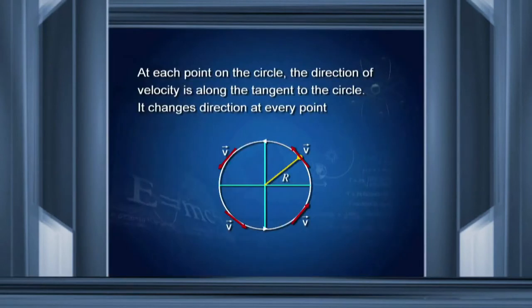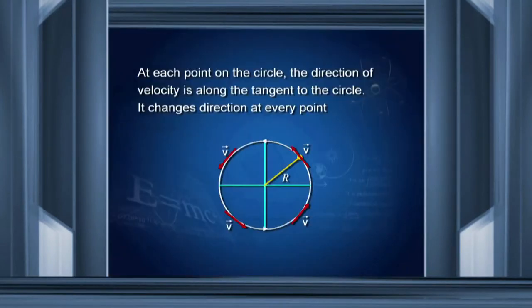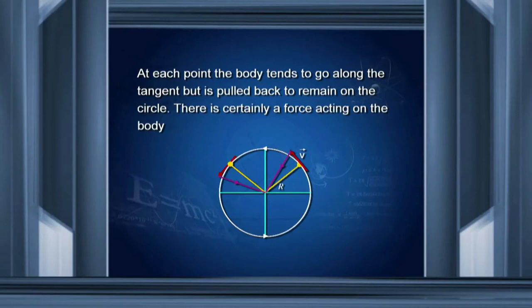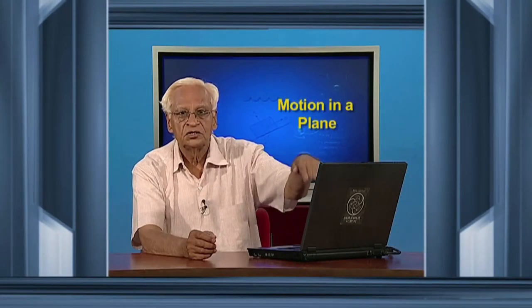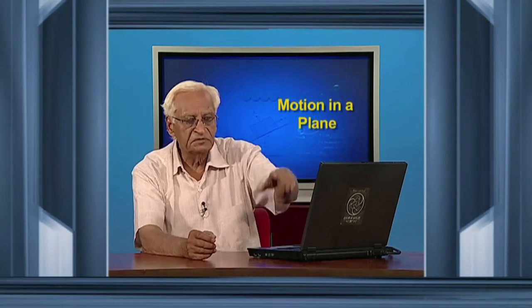Why is this so important? In a circle, the object is moving with velocity v tangential to the circle. When the object is at any point, it moves tangentially and tends to go off the circle along the tangent. That means there is a force which is bringing the object back to the circle, so that it keeps moving in a circle.